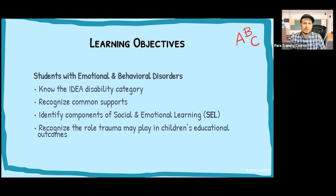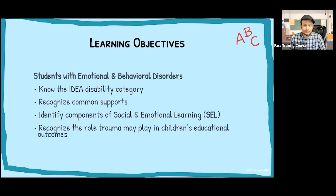These are our learning objectives. Students with EBD — we'll be using this acronym EBD a lot. We want to know the IDEA disability category, as we have looked at that in terms of other types of exceptionality already. We want to recognize common supports for students living with EBD, and to identify components of social and emotional learning. On Canvas there will be some additional optional resources for this. And we want to recognize the role that trauma may play in children's educational outcomes.